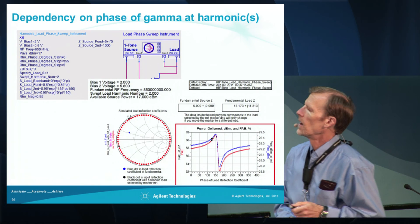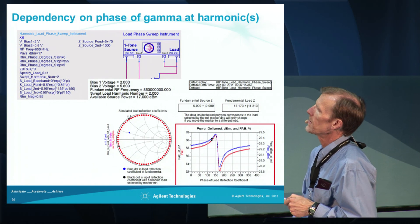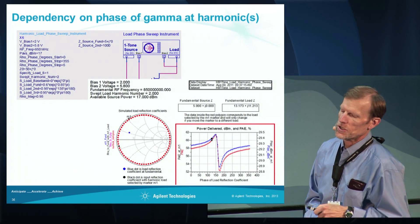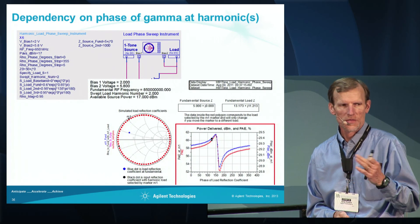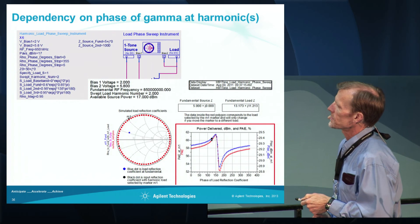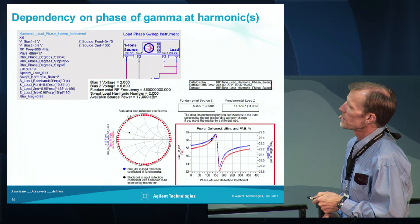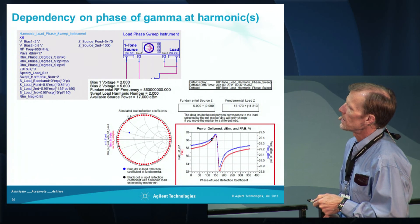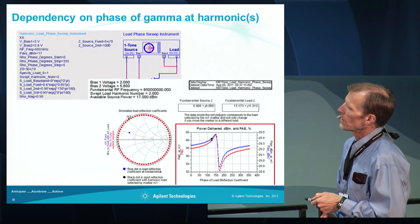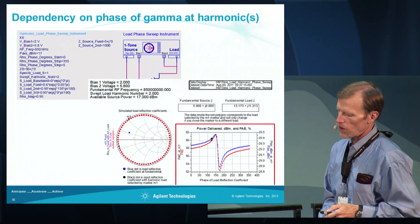We can also do a load harmonic phase sweep — this is a sweep of the second harmonic phase at a high reflection coefficient. This is a method of seeing how much the reflection coefficient at the second harmonic affects the overall performance of your PA. This shows that there is some variation — the blue is the power delivered and the red is the power added efficiency. There's a little bit of variation, and you probably want to avoid about 170 degrees, or near a short, for the second harmonic.